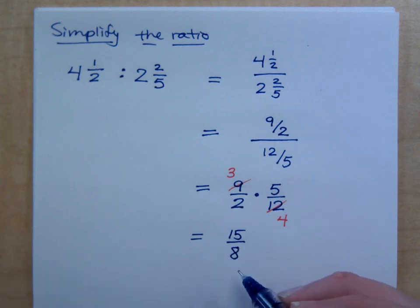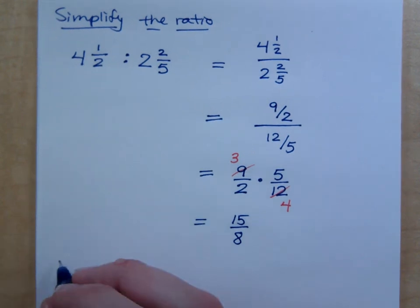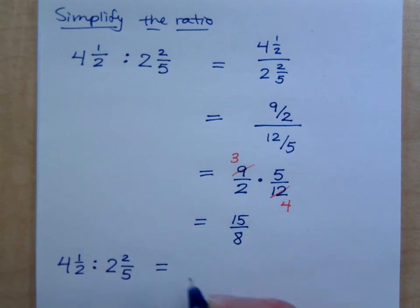So going back to this original question up here, my ratio of 4½ to 2⅖ reduces to what ratio? 15 to 8. That's how it reduces. Are you guys with me on that?